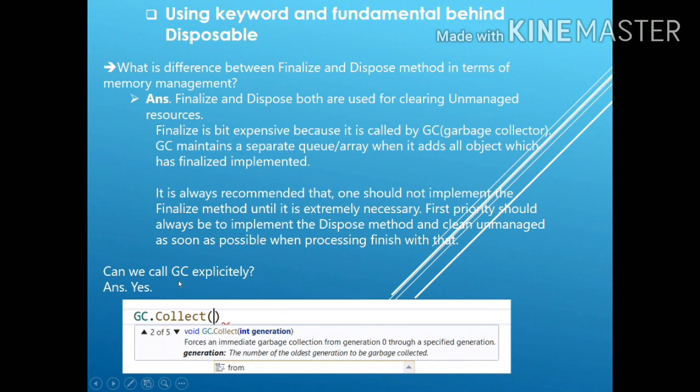Garbage collector has three generations: generation 0, generation 1, and generation 2. Garbage collector gets called periodically and it checks in each of the generations whether the object is in use or not. If the object is not in use, it is cleared. Can we call garbage collector explicitly? The answer is yes, but it is not recommended. With the help of GC.Collect, you can specify the generation to call the respective generation to be cleared.